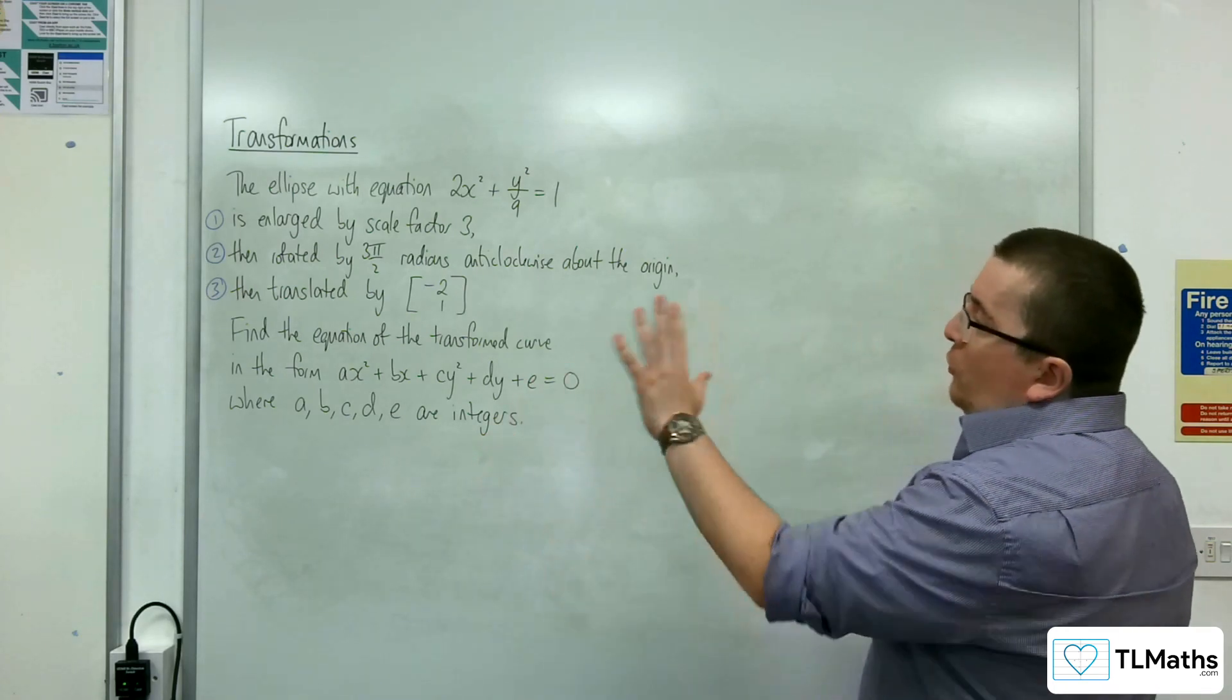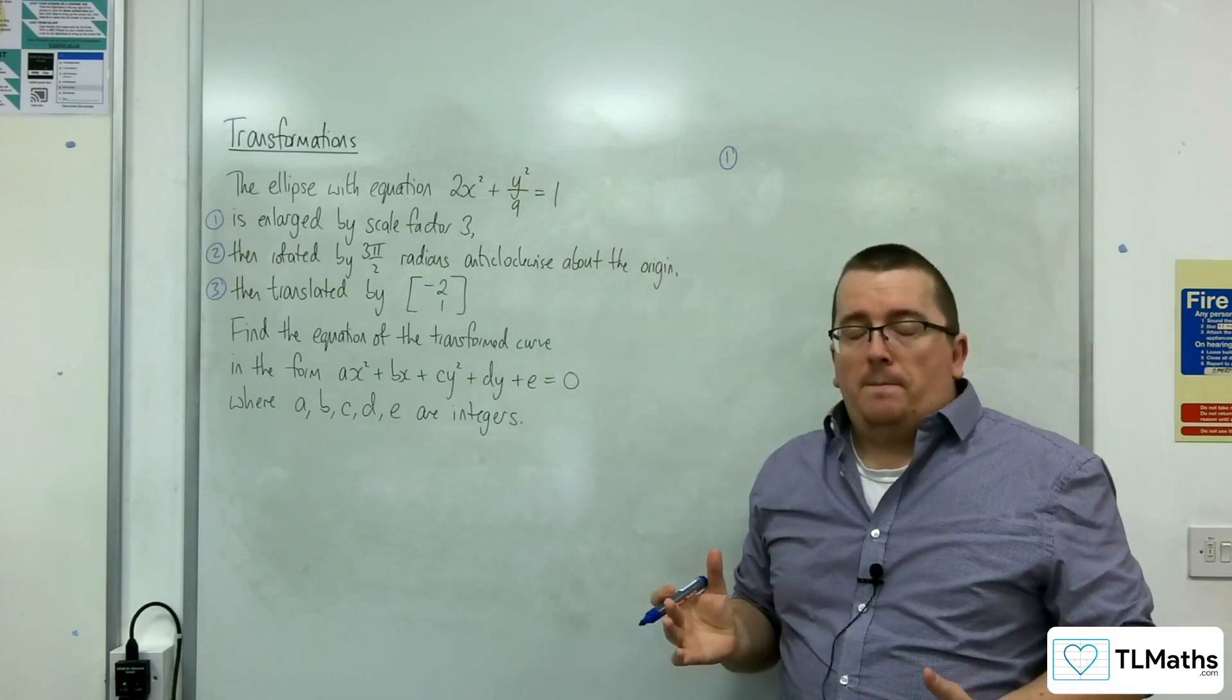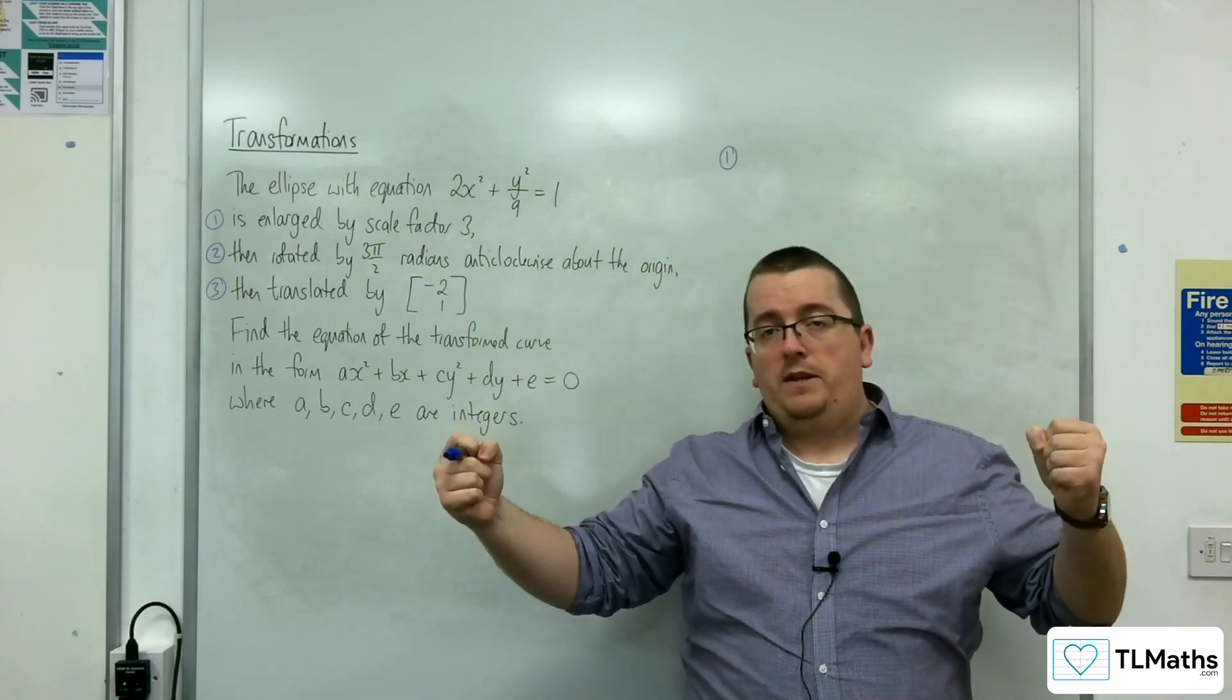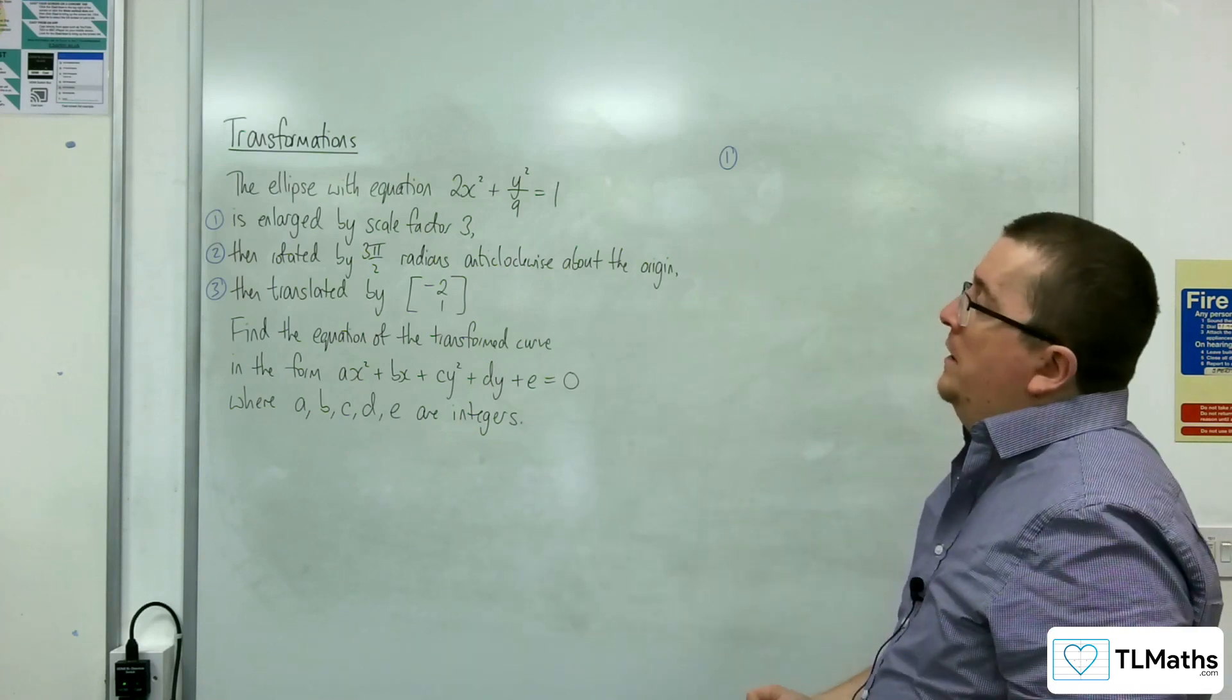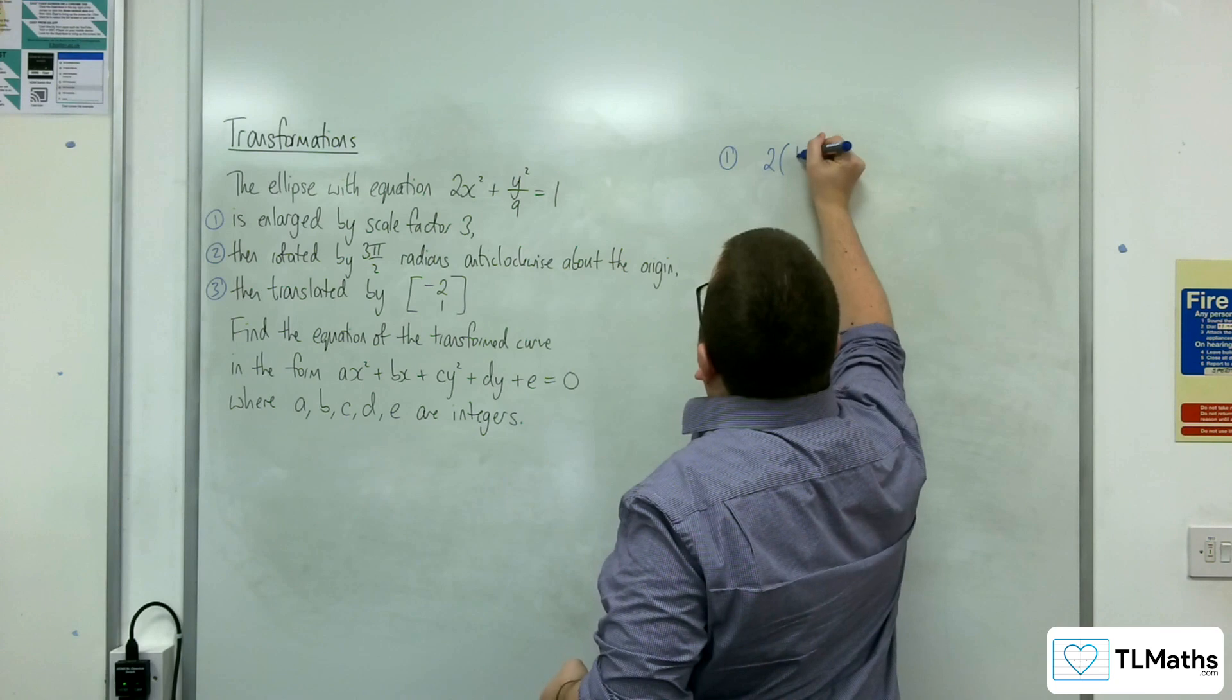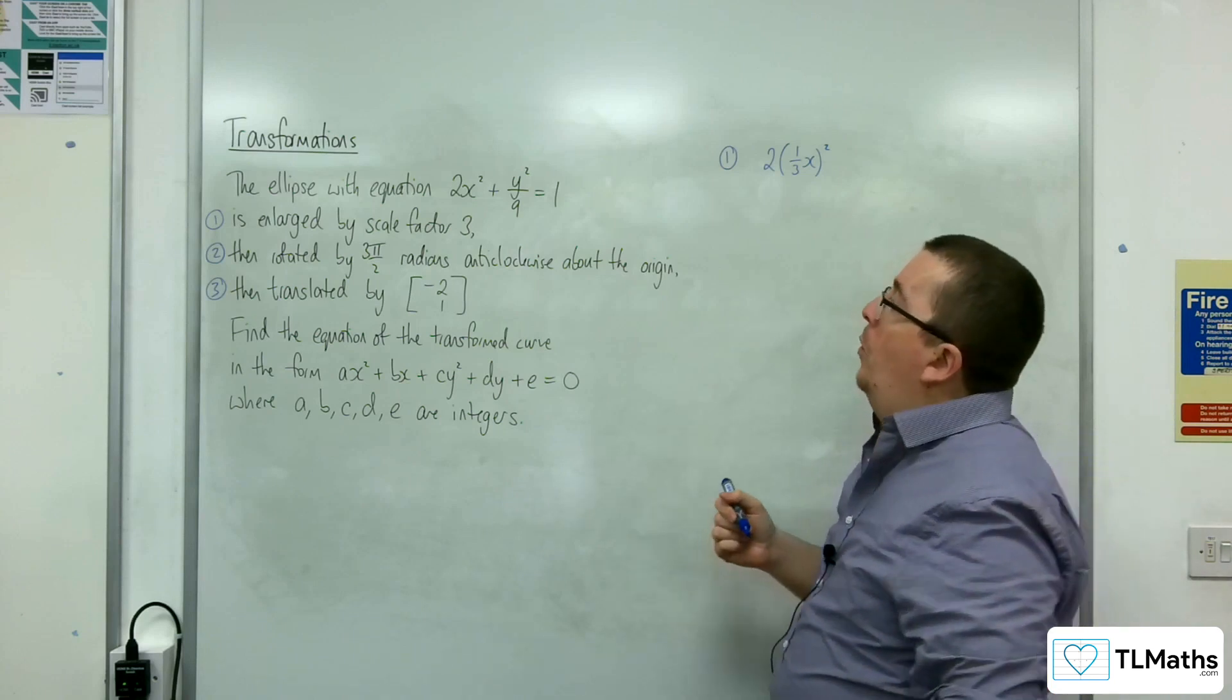So let's perform these in turn. The first one is it's enlarged by scale factor 3. So that means it's stretched parallel to the x-axis by scale factor 3, and it's also stretched parallel to the y-axis factor 3. So we need to replace the x with 1 third x. So we'll have 2 lots of 1 third x all squared. And we're going to replace the y with 1 third y as well.